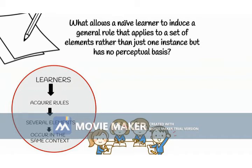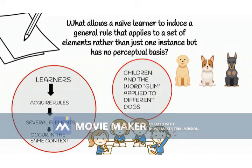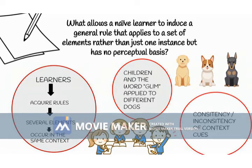For example, Xu and Tenenbaum have shown that if children hear the word GLEAM applied to three different dogs, they will infer that GLEAM means dog. In contrast, if GLEAM is used three times to refer to the same dog, children interpret it as the dog's name. The same contrast between learning items and learning rules can occur for syllable and word sequences. Findings showed that it was the consistency of context cues that led learners to generalize rules to novel strings, and it was the inconsistency of context cues that kept learners from generalizing and led them to treat some strings as exceptions.